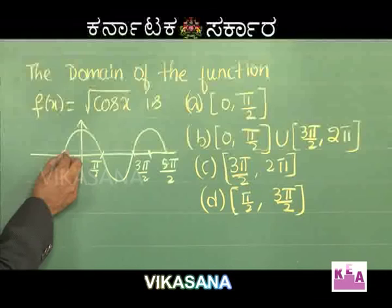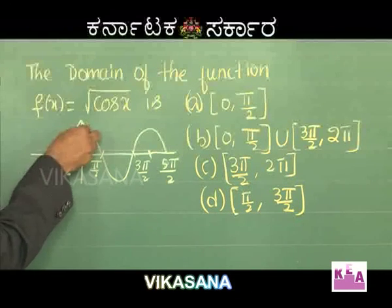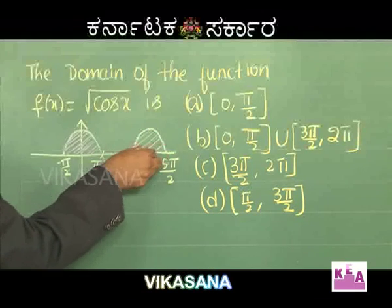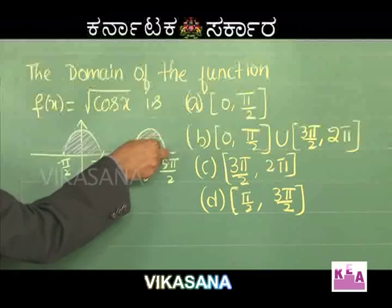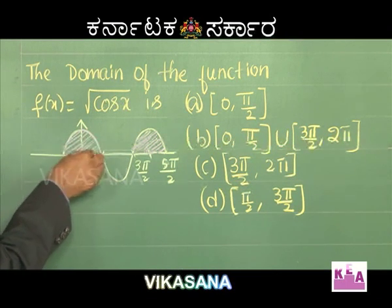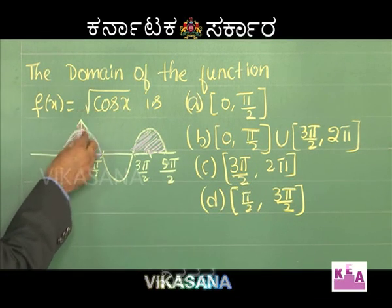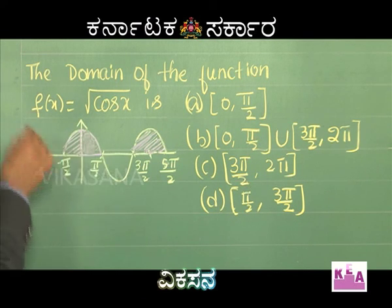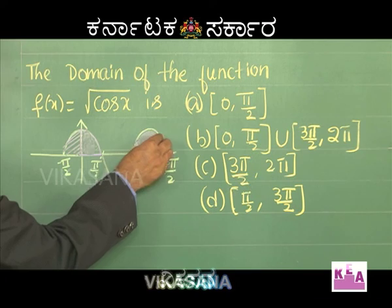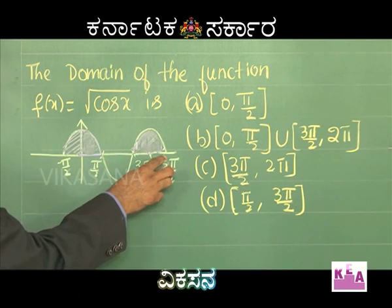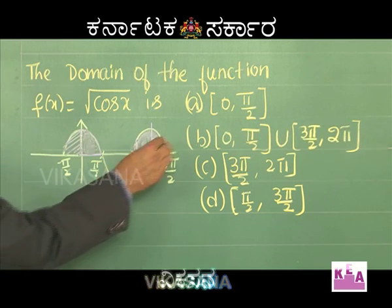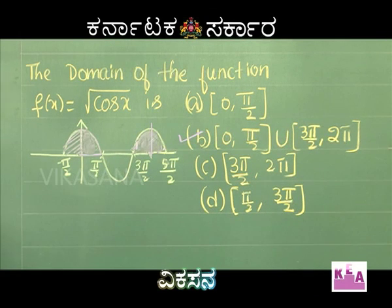From 0 to π/2 (including both endpoints), cos x is positive, so √(cos x) is defined. Also from 3π/2 to 2π, cos x is again non-negative, so the function is defined there too. Therefore the domain includes [0, π/2] ∪ [3π/2, 2π], making option b correct. It's a straightforward question if you know the graph of cosine.